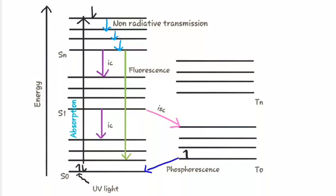Let us have a look at the Jablonski diagram. When UV light is absorbed by an electron, they get excited and from the singlet ground state, they reach the singlet excited state. Here the electrons are very unstable and hence they try to get back to the singlet ground state. The first way is non-radiative transmission, in which the electron shifts to the lower electronic level without radiating any radiation. The second way is internal crossing, in which there is a transition from the higher electronic level to the lower electronic level. The third way of relaxation is the radiative way, in which there is a transition from the singlet excited state to the singlet ground state, and it is known as fluorescence.